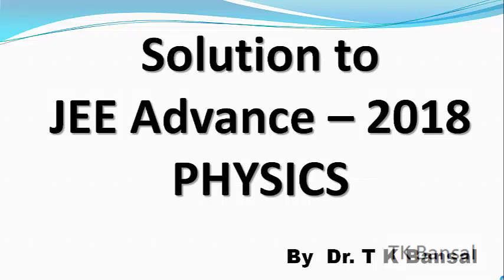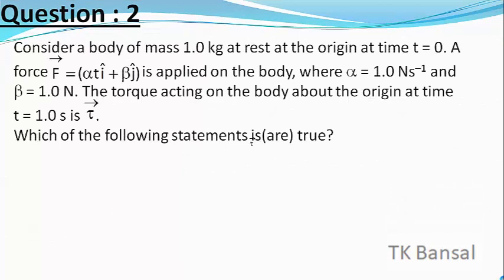Our question is: consider a body of mass 1.0 kg at rest at the origin at time t = 0. A force F vector equals alpha·T î + beta ĵ is applied on the body, where alpha = 1.0 N·s⁻¹ and beta = 1.0 N. The torque acting on the body about the origin at time t = 1.0 s is τ vector.